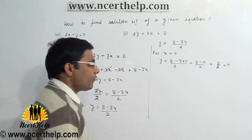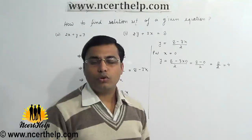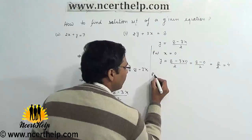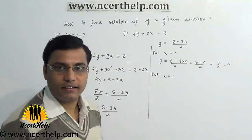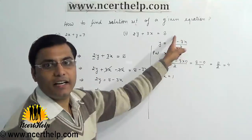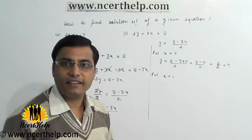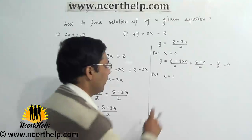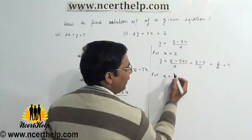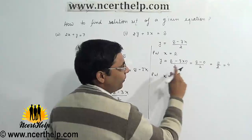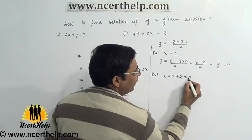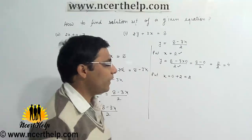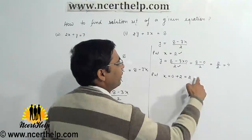8 over 2 gives y equals 4, a whole number. If I plug x equals 1, I get 8 minus 3 equals 5 over 2, which is a fraction. To get the next whole number, there is a small trick: add the denominator to the previous x value. The denominator is 2, so the next value of x to try is x equals 2.